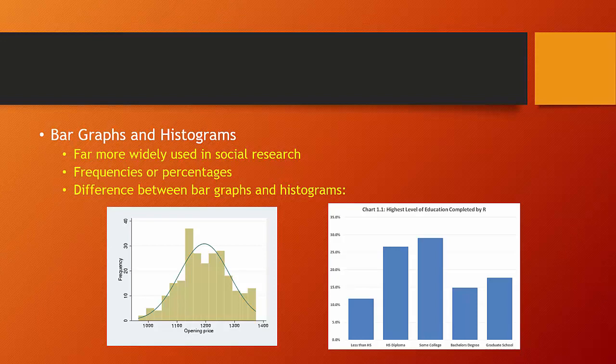And you can see the categories: less than high school, high school diploma, some college, bachelor's degree, and graduate school. What happens with both a histogram and with a bar chart is you increment upwards as you go from the lowest category to the highest category.